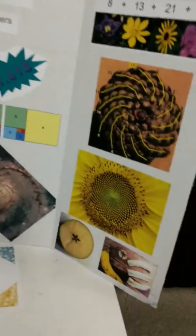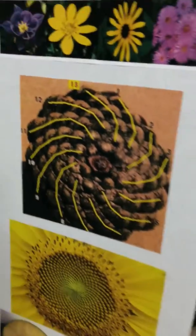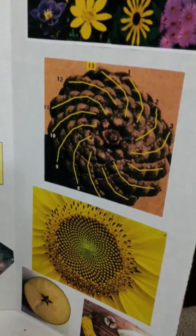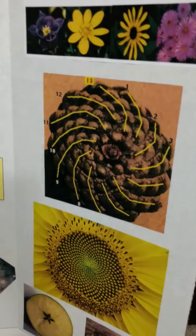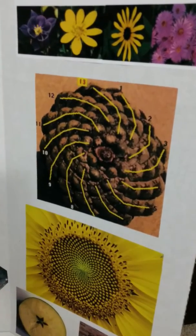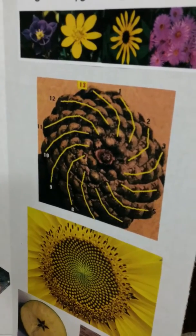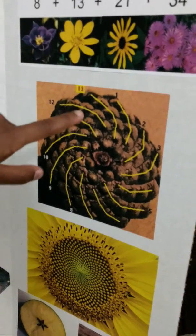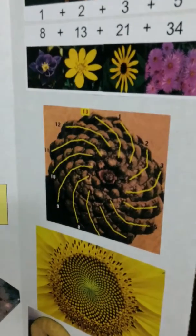Fibonacci numbers are used in many things. The pinecone uses 13 spirals, as you can see — one, two, three, four, five, and so on.